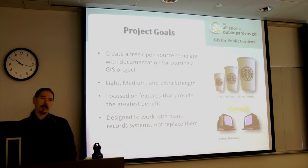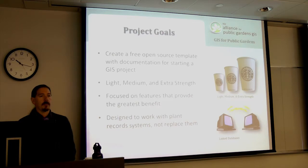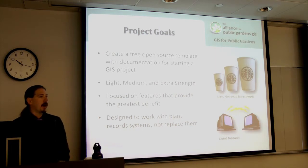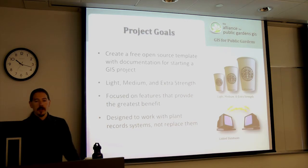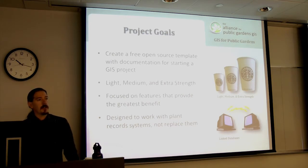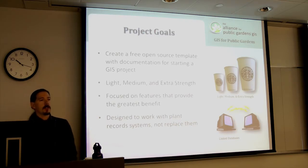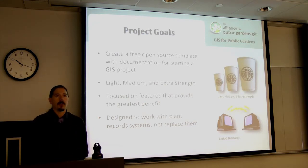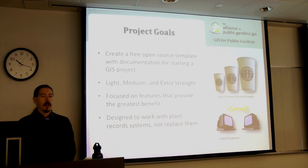We tried to make it in light, medium, and extra strength versions — complex enough to be used by the largest garden with all sorts of complex needs, but also able to be used by someone who just wants to map their personal property. Because gardens are sometimes very complex, we knew we weren't going to be able to design something that accommodates everybody's needs, so we focused on features that provide the greatest benefit to the majority of gardens. Because a lot of gardens already have dedicated database systems to manage their plant records, we opted to make something that worked in conjunction with those rather than replacing them. You can link the two systems together so you can click on plants on your map and pull up information from another database.